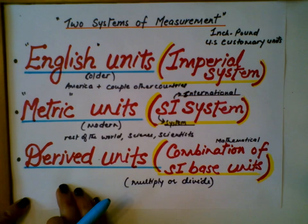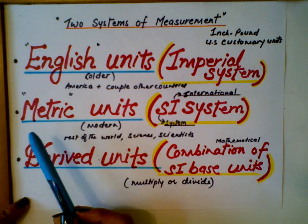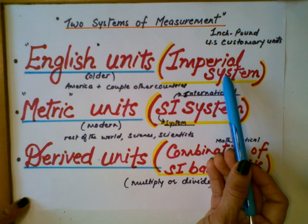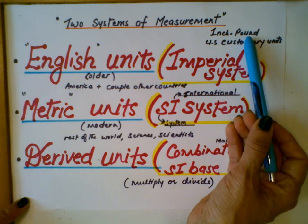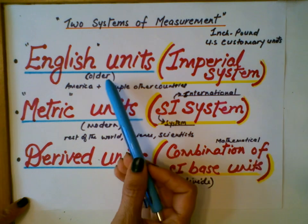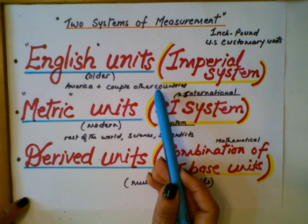This video is on the two major systems of measurement: English and metric. The English system is also called the imperial system, imperial units, inch-pound units, or U.S. customary units. This is an old system, but it's now only used in America and a couple other countries.